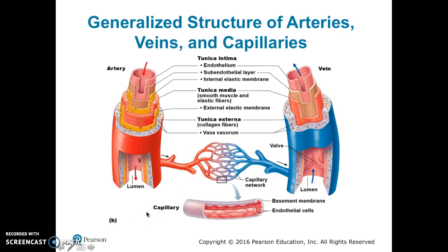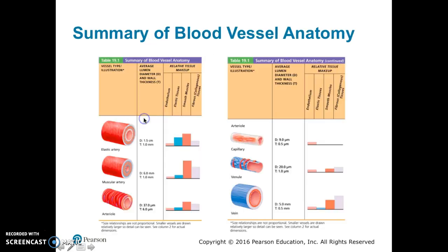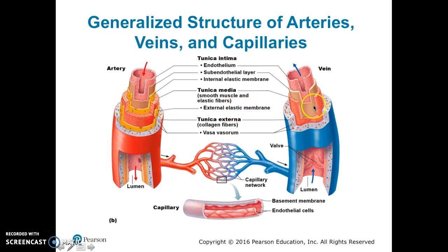Here we see a comparison of a generalized artery and vein. Both have three tunics. The tunica intima is the innermost layer — we see the lumen at the center, then the tunica intima, which is made up of the endothelium, the sub-endothelial layer, and, in the artery, an internal elastic membrane. On the artery, the tunica media is thicker than the externa. On the vein, we have a thinner tunica media and a larger externa.